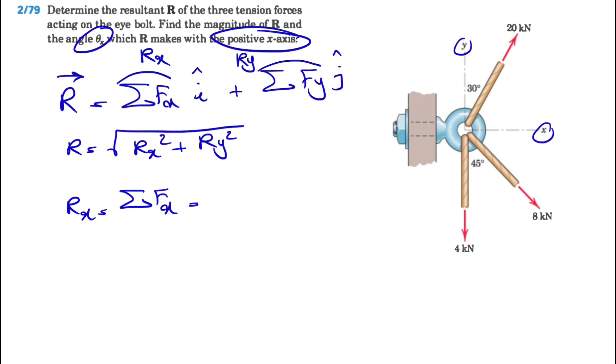We have the x component of the 20 kilonewton force, which will be this force. This angle, if this one's 30, you're looking for this one, which will be 20 sine of 30 degrees. Since it's to the right it will be positive. We also have the x component of the 8 kilonewton, which will be this force in here, and that's going to be 8 sine of 45 degrees.